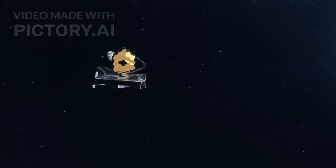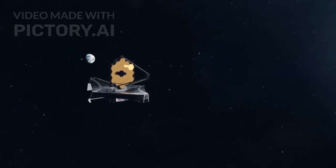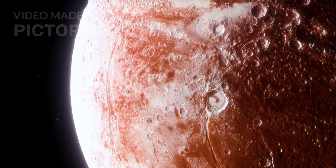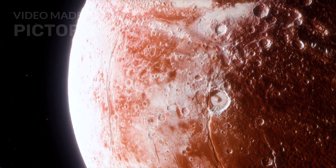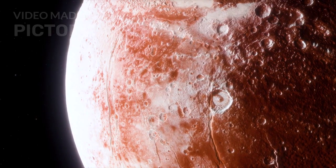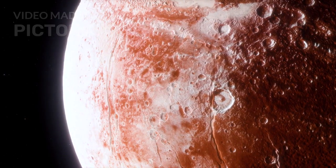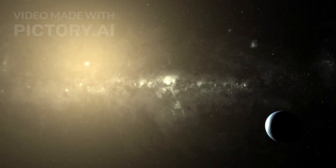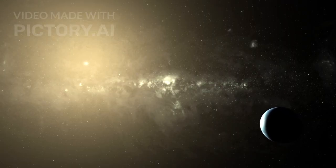The James Webb Space Telescope has pulled back the curtain on Pluto, transforming our understanding of a world we once thought we knew. For decades, Pluto was the underdog of the solar system, demoted, dismissed, written off as just a frozen, static rock drifting in the cold void. But now, Webb's infrared eyes have revealed a very different story.